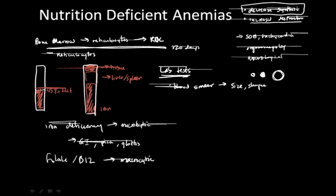Lab tests that can confirm iron deficiency include serum iron and transferrin levels. Transferrin is a molecule in the plasma that binds iron and helps transport it across different cells. When the body detects insufficient iron, it increases transferrin production to absorb more from the small intestine, but the saturation of transferrin decreases. There is also a decrease in ferritin — the intracellular molecule used to bind iron — and plasma ferritin levels correlate well with intracellular ferritin since plasma ferritin is largely a leakage of the intracellular protein.